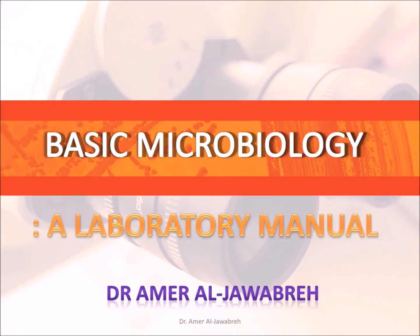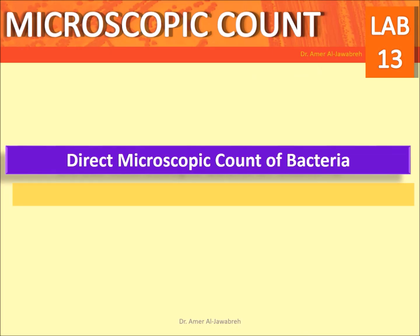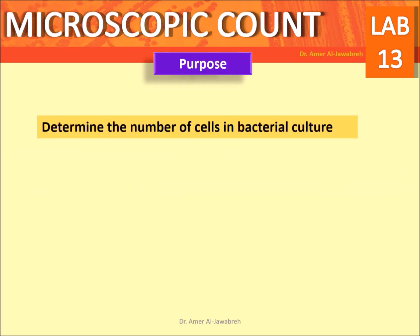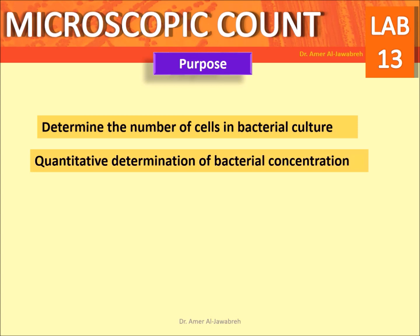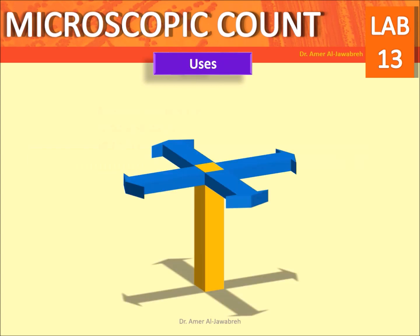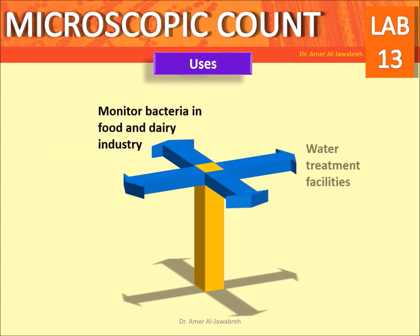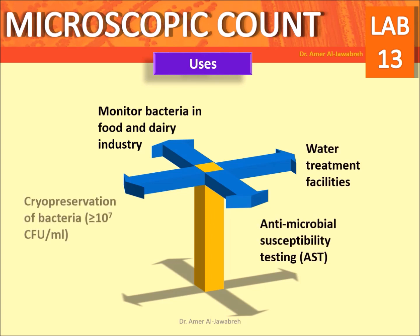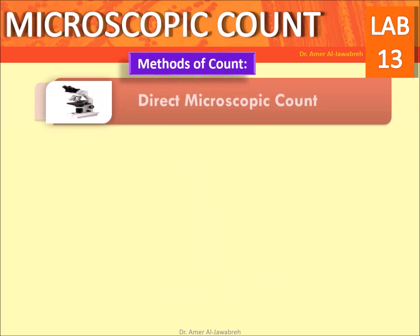Basic microbiology, a laboratory manual. Direct microscopic count of bacteria — determining the number of cells in a bacterial culture. Quantitative determination of bacterial concentration is used to monitor bacteria in food and dairy industries, water treatment facilities, antimicrobial susceptibility testing (AST), and cryopreservation of bacteria at concentrations greater than or equal to 10 to the power of 7 CFU per mL.